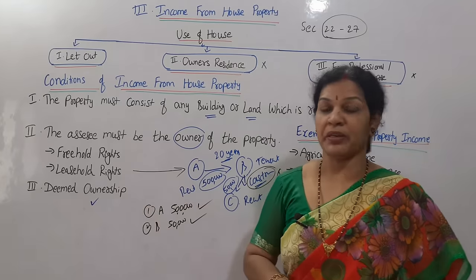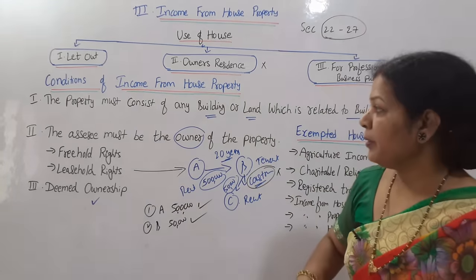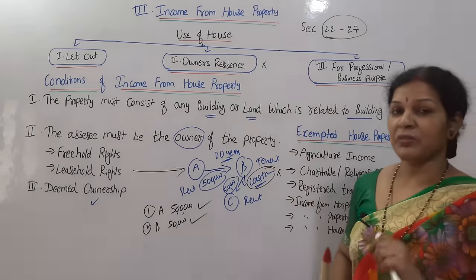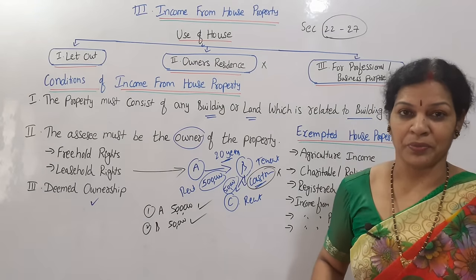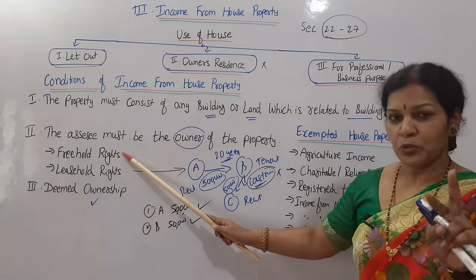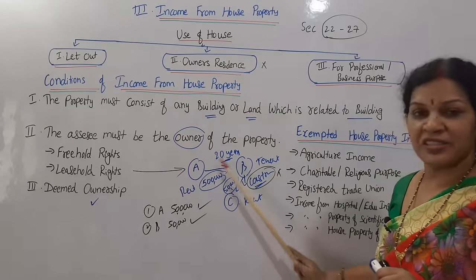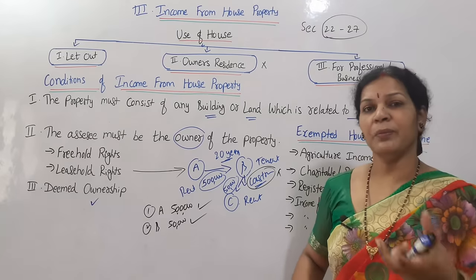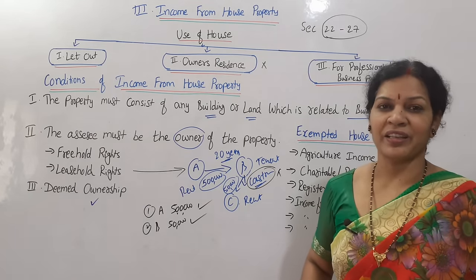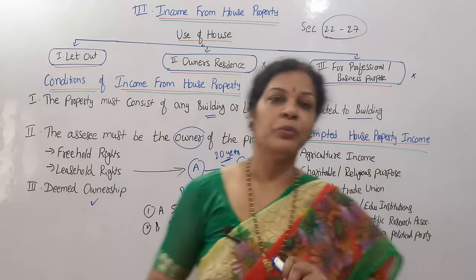To summarize the conditions of income from house property: the first condition is that the property must consist of any building or land related to a building — with the roof and no-roof points noted. The second condition is that the assessee must be the owner — covering freehold rights, leasehold rights, and deemed ownership. These are the key conditions to remember.